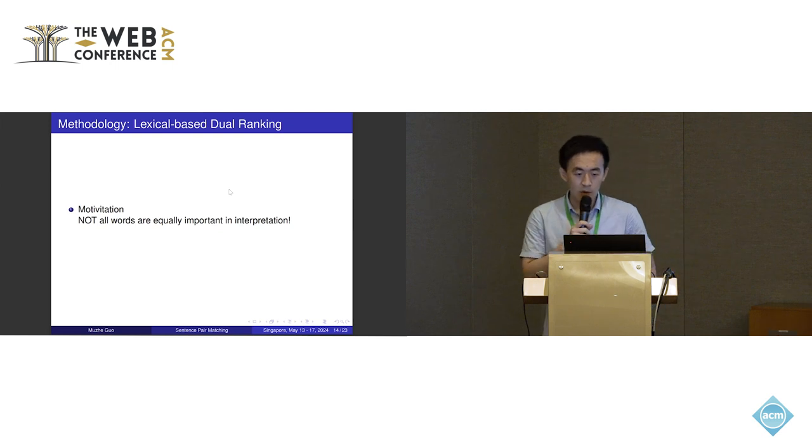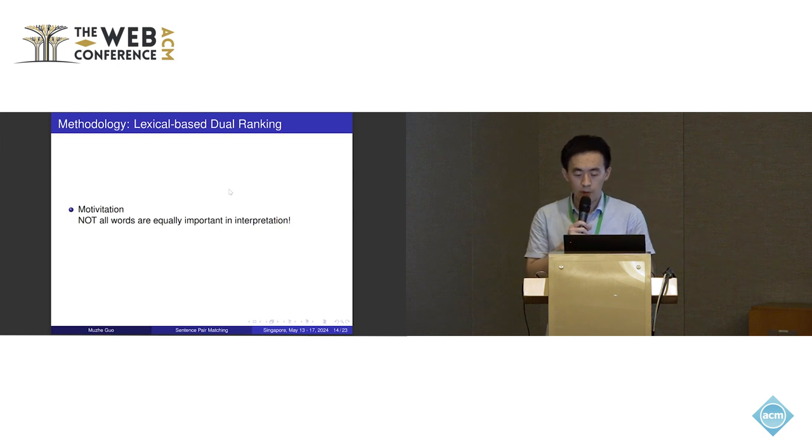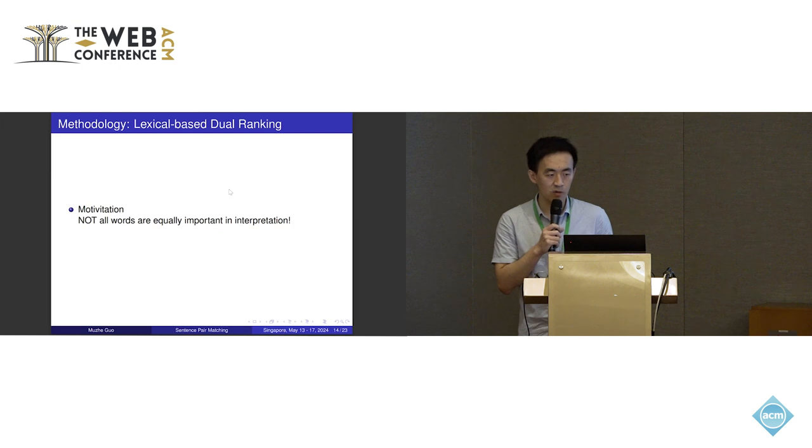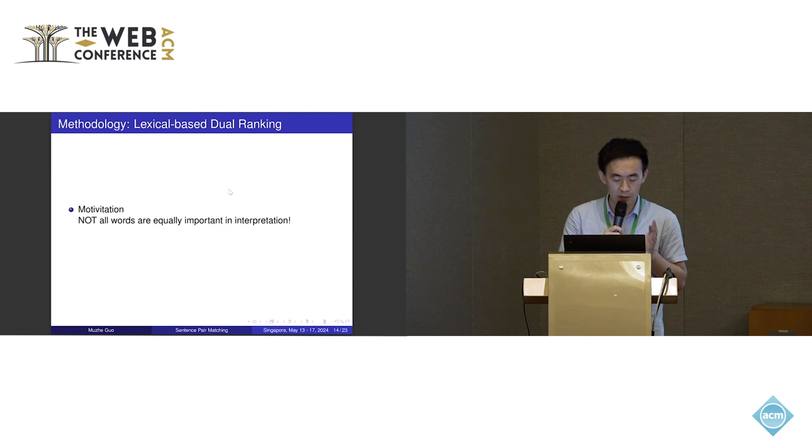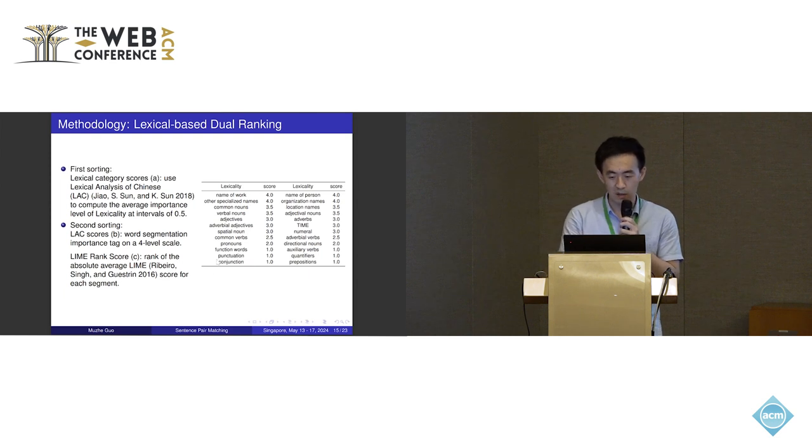The third one is lexical-based dual ranking. This is for model interpretation. The motivation here is that not all words are equally important in interpretation. For traditional interpretation methods like gradient-based method or SHAP or LIME, they treat all the tokens equally at the beginning, but it's not true. If we read a sentence, we may pay more attention to the name of work or name of person in the sentence, but we pay less attention to punctuations and conjunctions, for example.